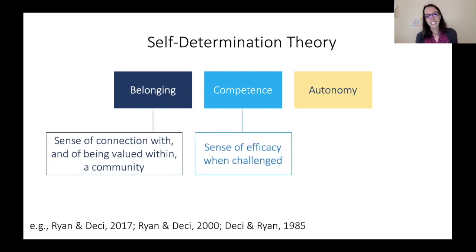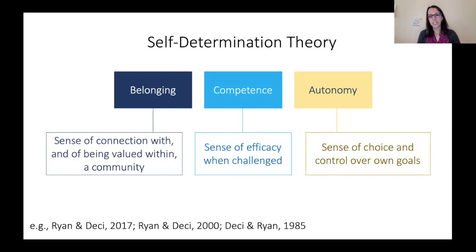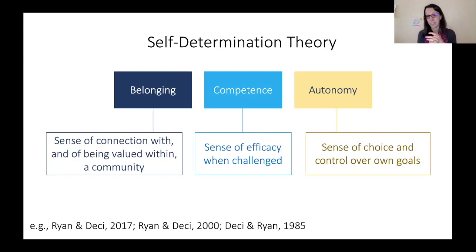Competence is students' sense of their efficacy when challenged — do they feel like they can rise to this challenge and meet it well? Do they feel confident in doing the activity being asked of them? Autonomy is students' sense of choice and control over their own goals. If we pause and think about this particular context — COVID, the pandemic, and remote learning — all three of these are kind of under threat right now.